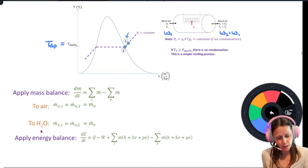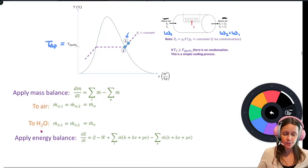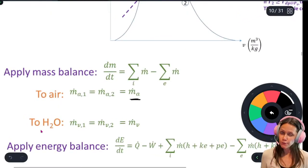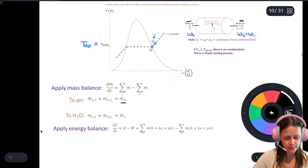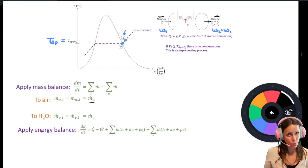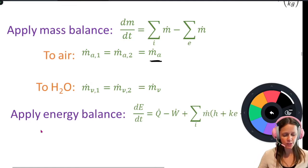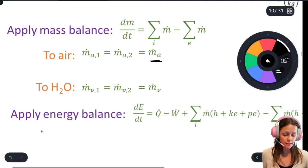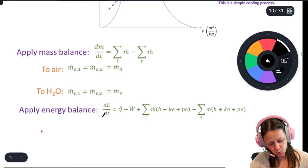For the dry air with one inlet and one outlet, m-dot_a1 = m-dot_a2, so we can drop the subscript and just call it m-dot_a. For the water vapor, you have to be more careful — if there's condensation, you'd have a second outlet. But for a simple heating and cooling process with no humidification or dehumidification, m-dot_v1 equals m-dot_v2, which lets us drop those subscripts as well.